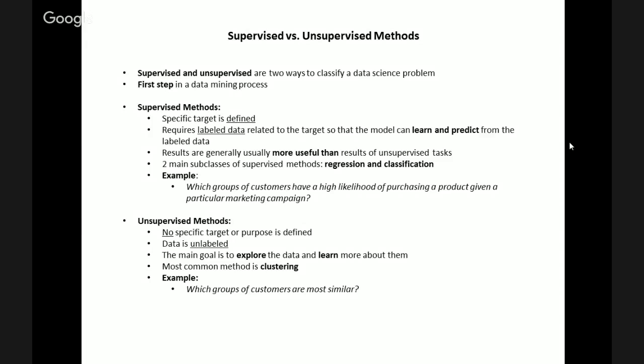An example of an unsupervised data science problem is the following: which groups of customers are most similar? This question could be answered via a clustering task and could help the company determine which products to offer customers, taking into consideration the similarities among them.